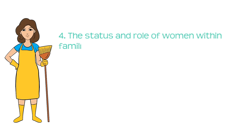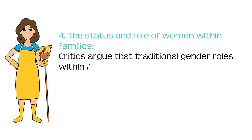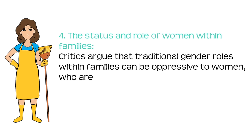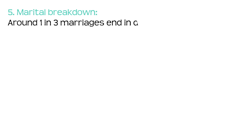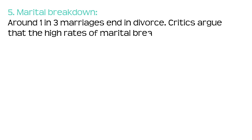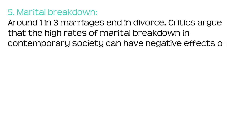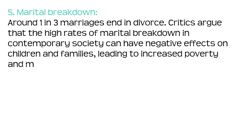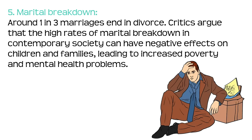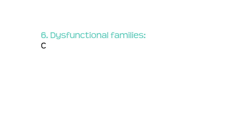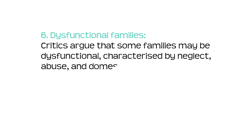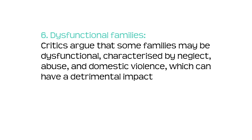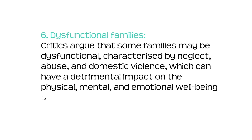Number four: the status and role of women within families. Critics argue that traditional gender roles within families can be oppressive to women, who are often expected to take on the majority of domestic and caregiving responsibilities. Number five: marital breakdown. Around one in three marriages end in divorce. Critics argue that the high rates of marital breakdown in contemporary society can have negative effects on children and families, leading to increased poverty and mental health problems. Number six: dysfunctional families. Critics argue that some families may be dysfunctional, characterised by neglect, abuse and domestic violence, which can have a detrimental impact on the physical, mental and emotional wellbeing of family members.